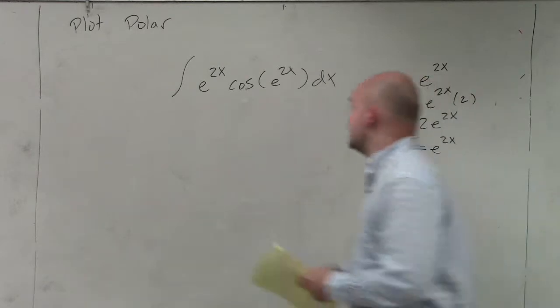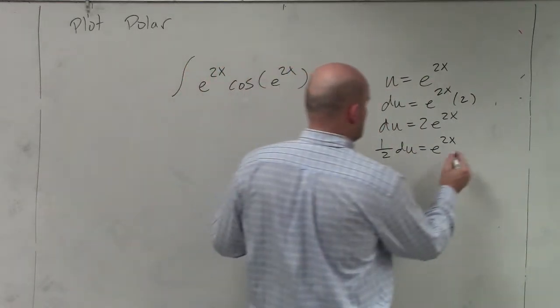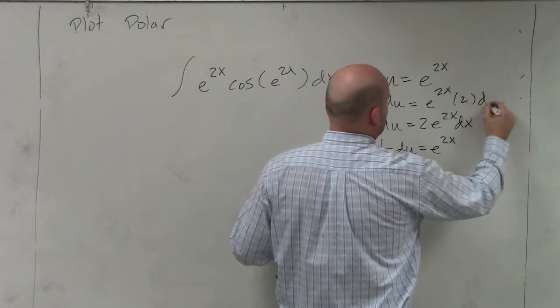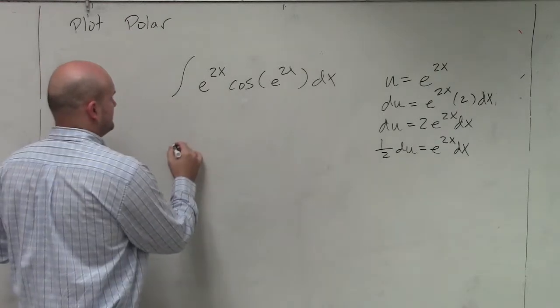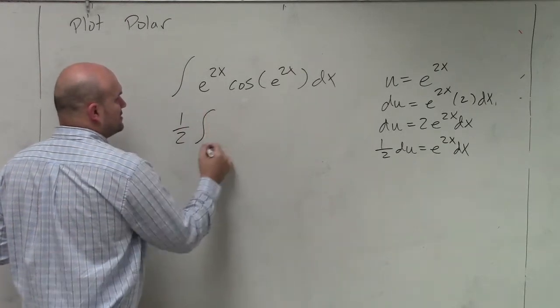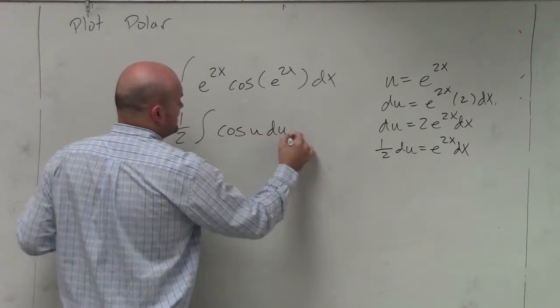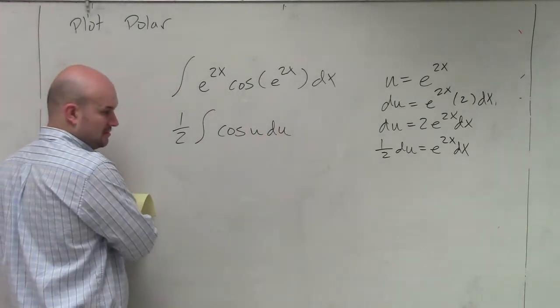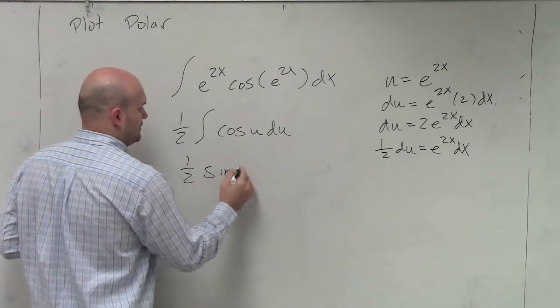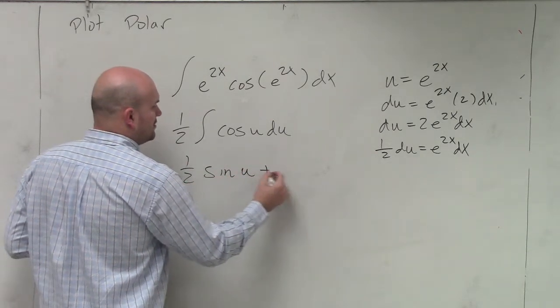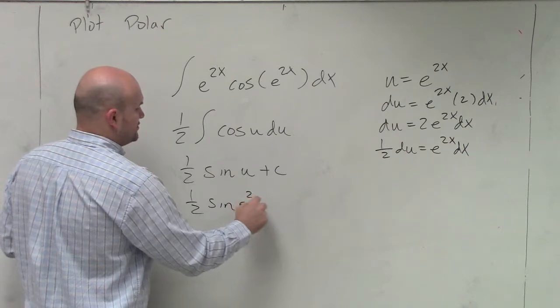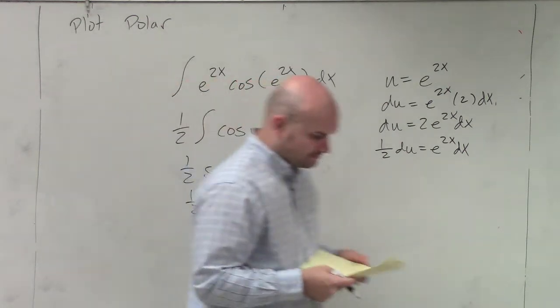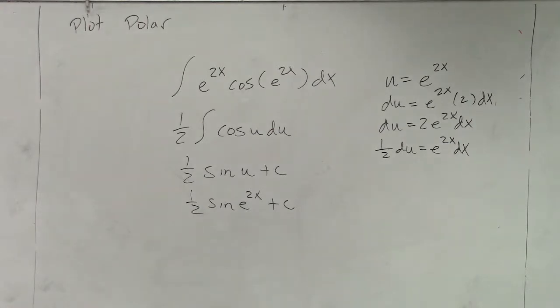So we have that, which we're good in this case. You can see we have our e to the—where did I write my dx? You've got to be careful with that. So I have e to the 2x dx, which I'm good. So therefore, I have one half integral of cosine of u du. Can I integrate the cosine? Of course I can. Sine of u plus c. And then I just plug in my u, which is one half sine of e to the 2x plus c. All right.